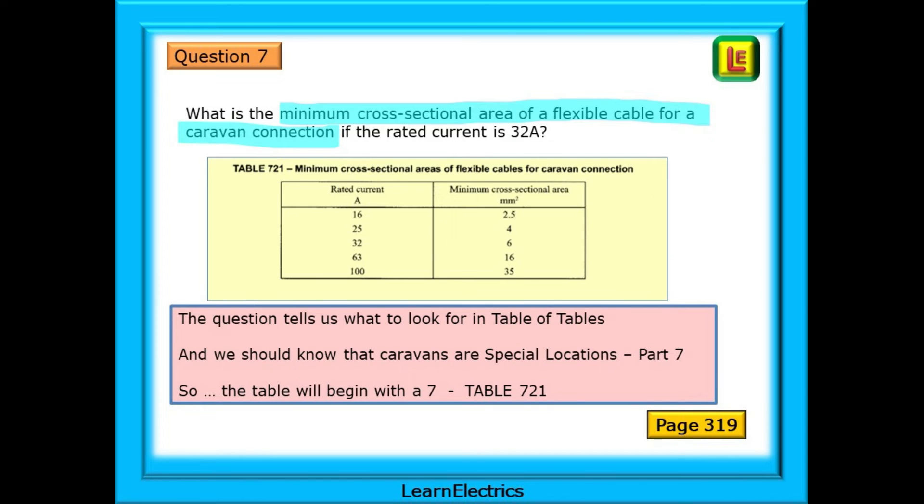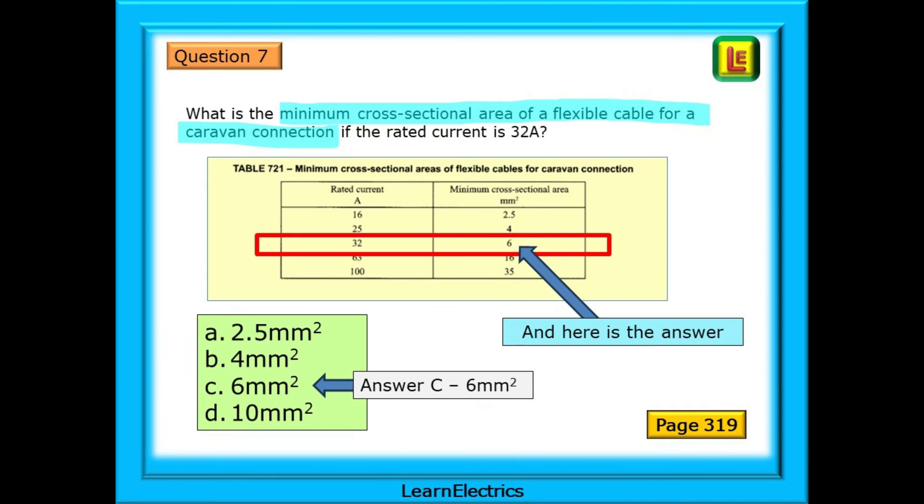The question tells us what to look for in the table of tables at the back of the book. And we should know that caravans are special locations, part 7. So, the table will begin with a 7. Table 721, and we find this table on page 319 of the book. It is now a simple case of finding 32 amps in the left column and matching this to the right column. And here is the answer, 6 square millimetres. Answer C. So easy with the right table selected.